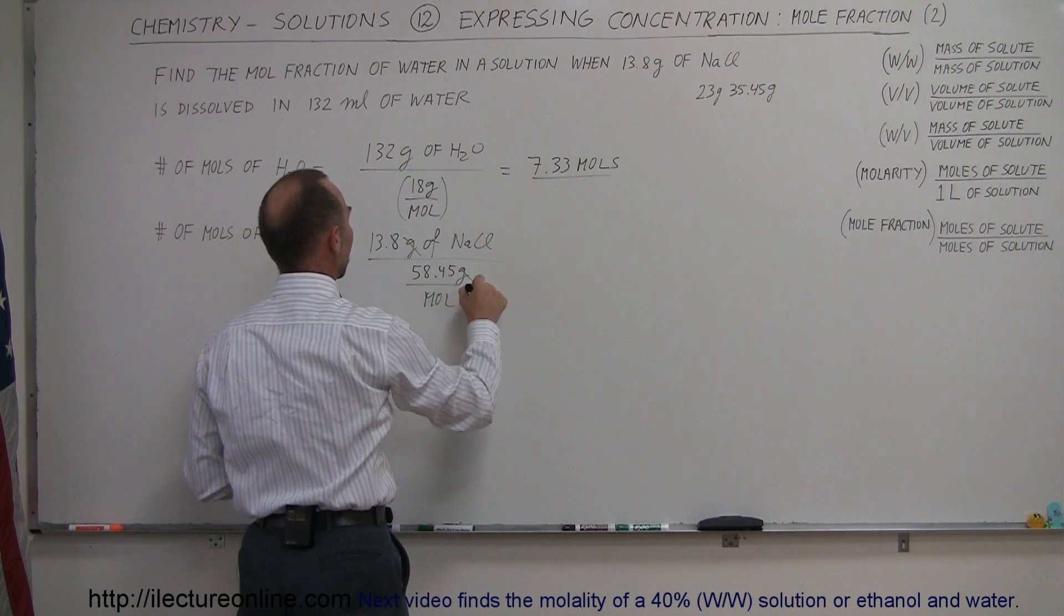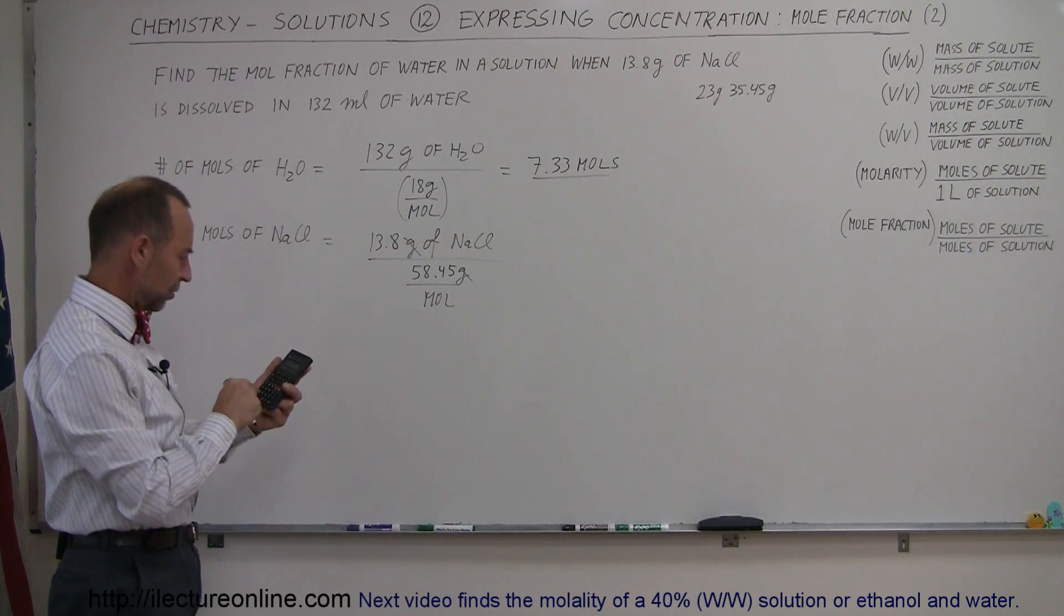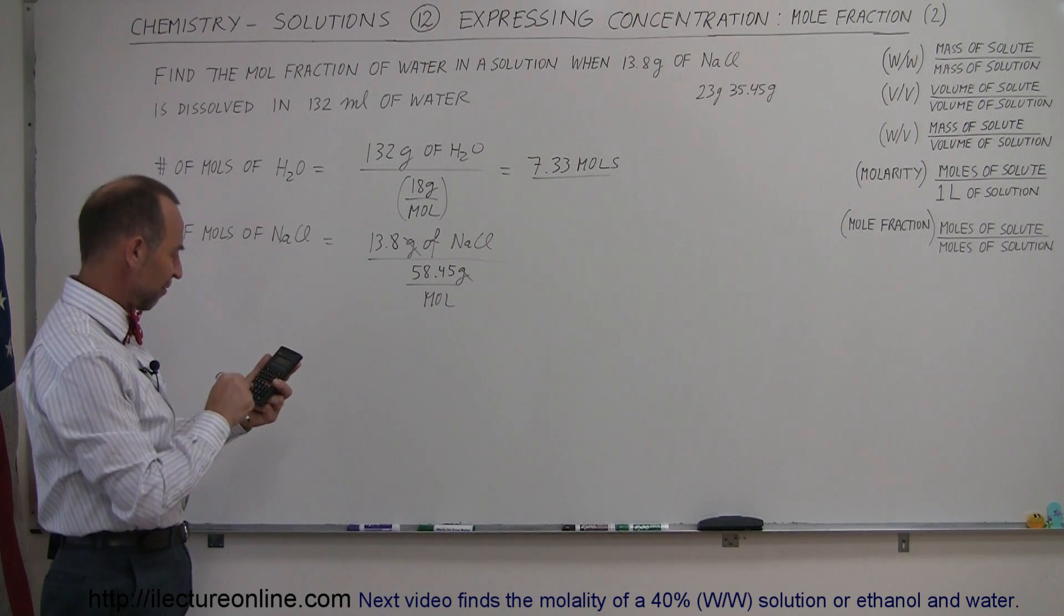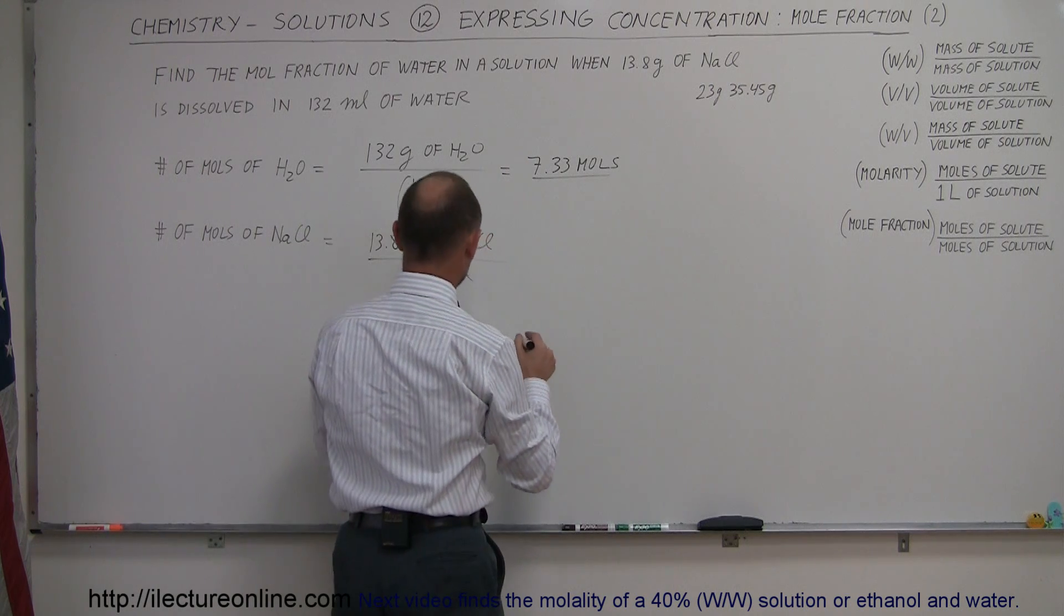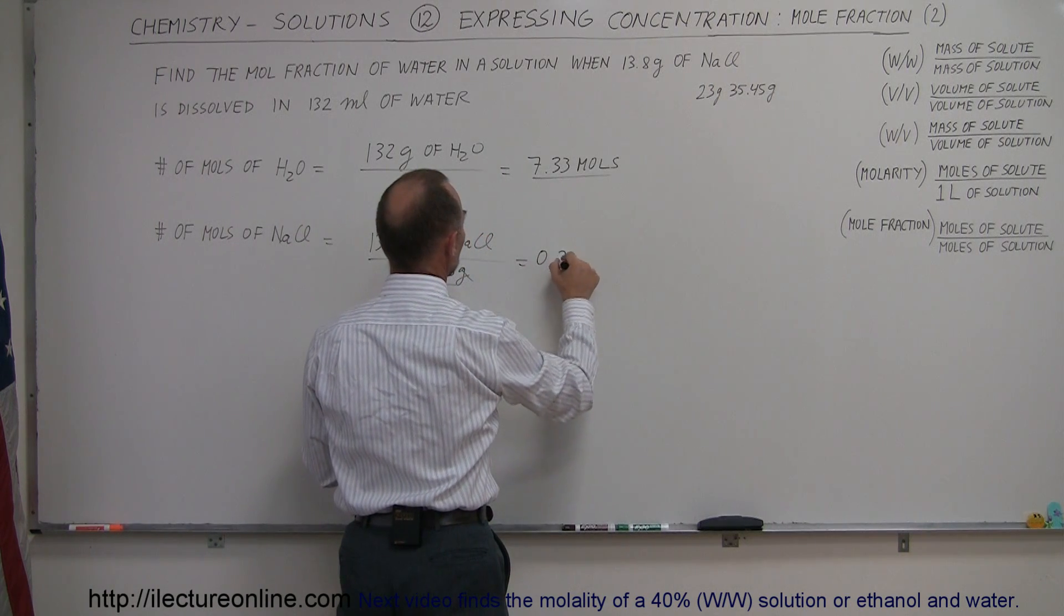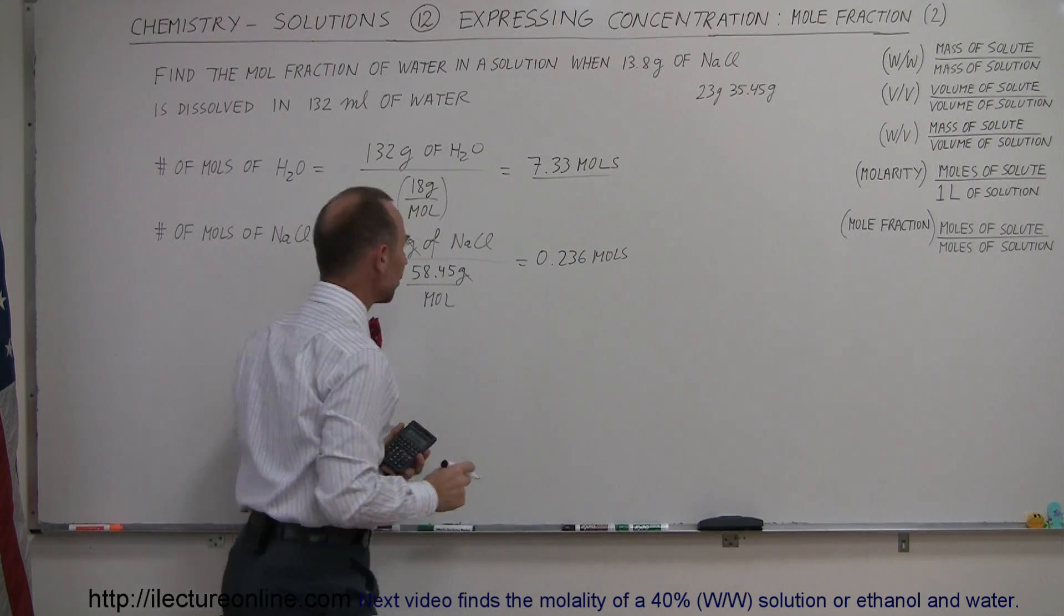If we add that together, that gives us 58.45, so 58.45 grams per mole. Notice that the grams cancel out, divide by 1 over mole, we end up with moles. And so 13.8 divided by 58.45, that's 0.236, 0.236 moles of sodium chloride.